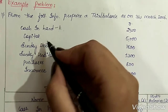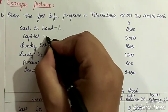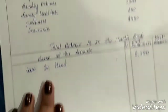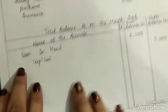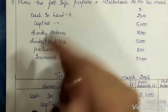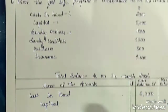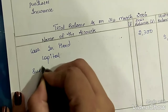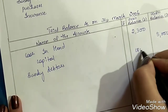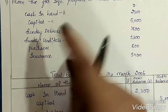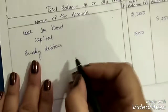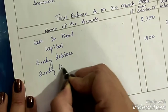Next, capital should be recorded on the credit side — rupees 5000 on the credit side. Next, sundry debtors. Sundry debtors are assets, and assets have debit balance, so they need to be recorded on the debit side — rupees 1800. Next, sundry creditors. Creditors are our liabilities, and liabilities need to be recorded on the credit side — rupees 1300.